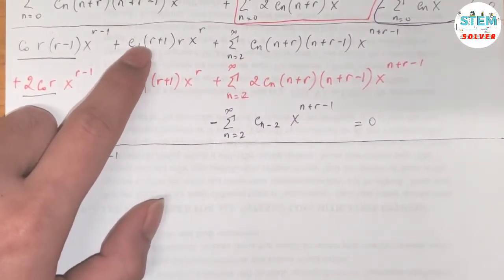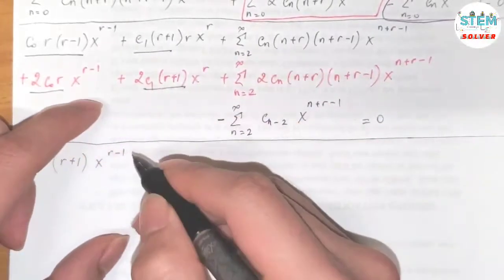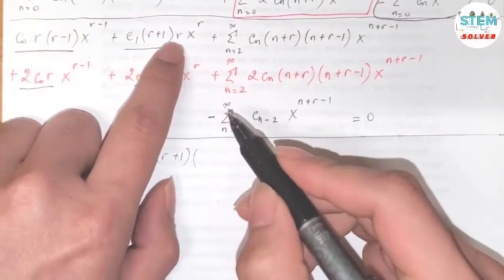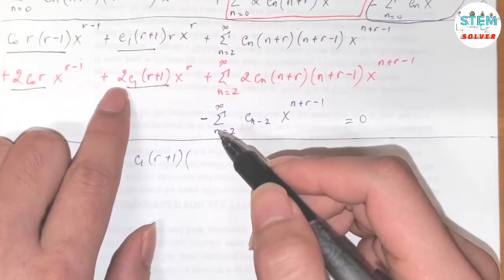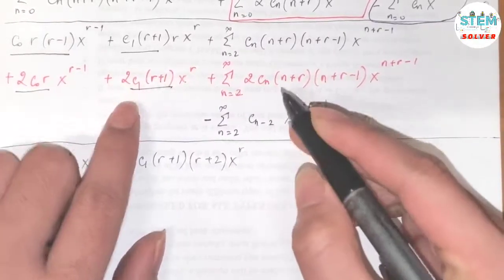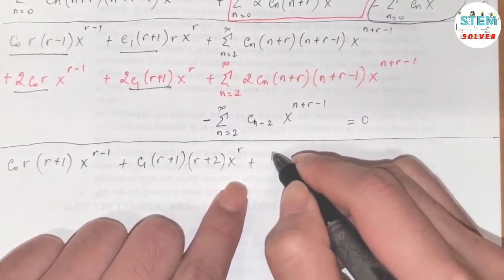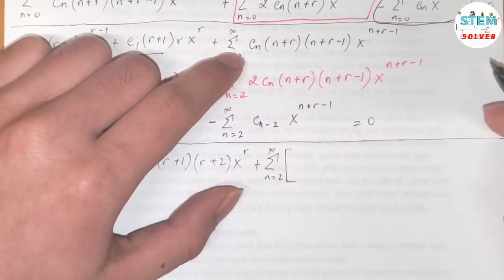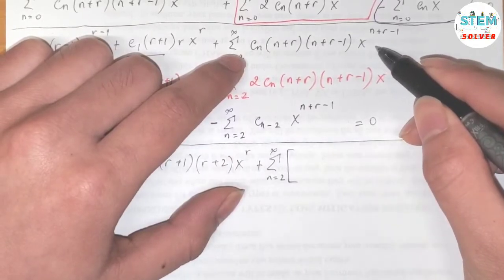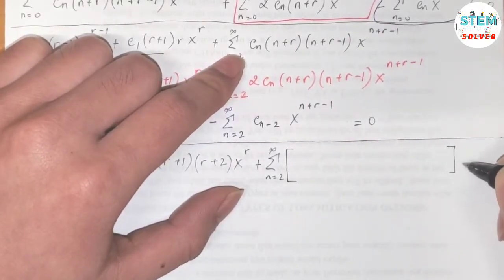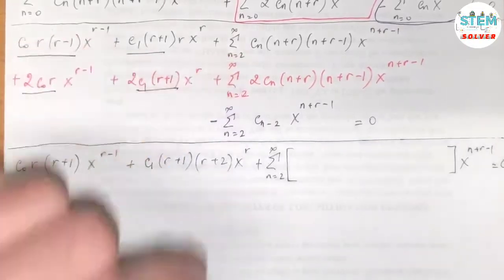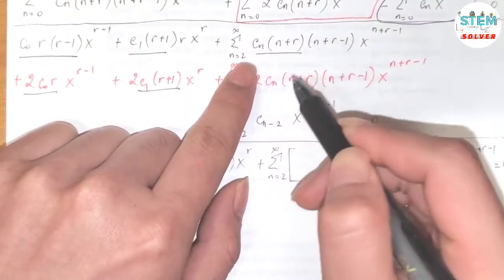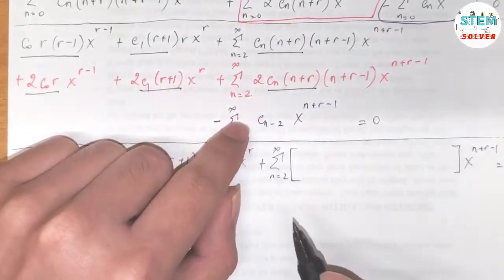For x to the r: I have c_1(r+1)(r+2) times x to the r. Then for the summation from 2 to infinity, factoring out x to the (n+r-1): inside the bracket I have c_n(n+r)(n+r-1) plus 2c_n(n+r) minus c_{n-2}, which simplifies to c_n(n+r)(n+r+1) minus c_{n-2}.